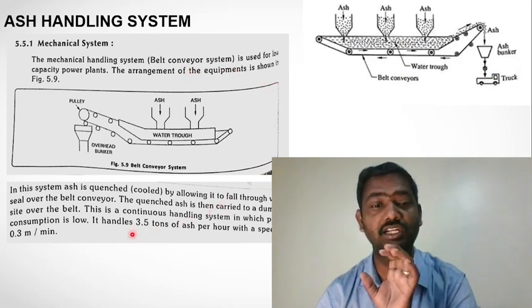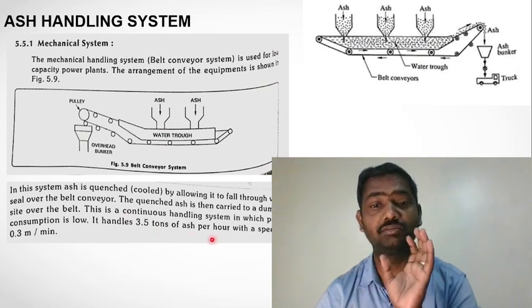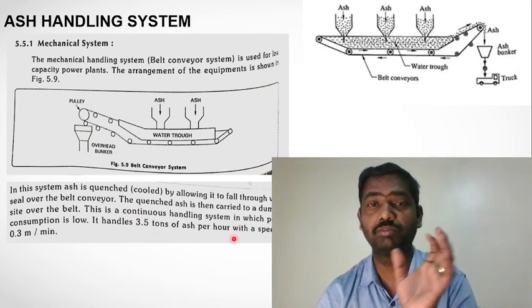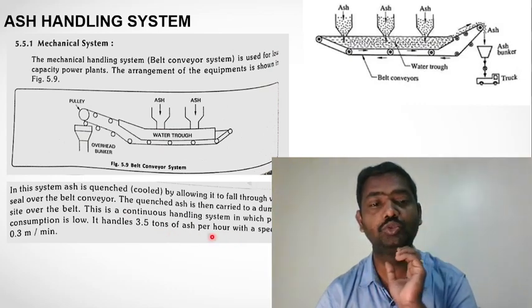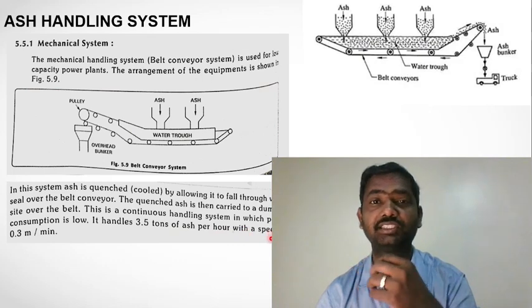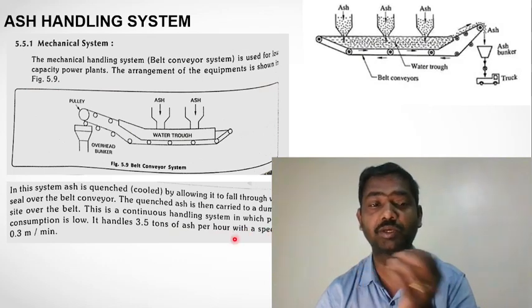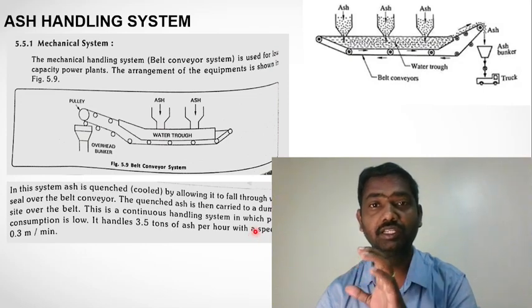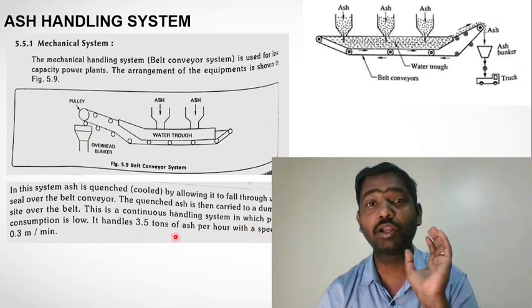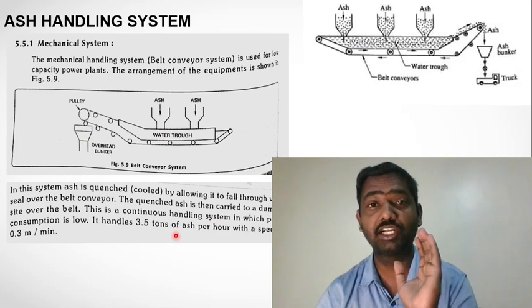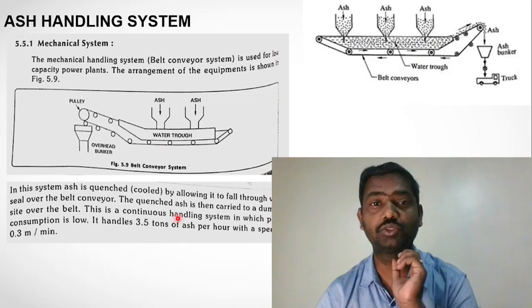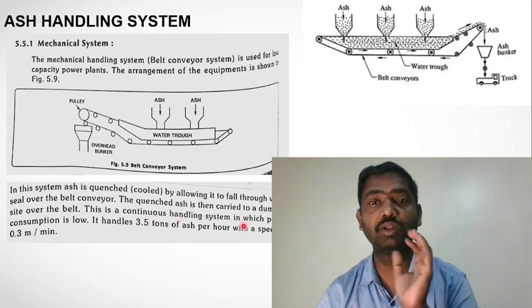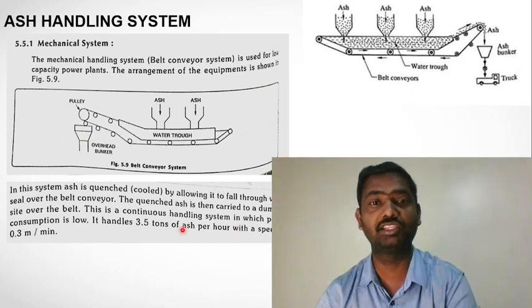In general, this system is used for about 3.5 tons per hour and is used in low-capacity power plants. The speed is about 0.3 meters per minute. The power plant capacity handled is about 3.5 tons. This is a mechanical ash handling system.